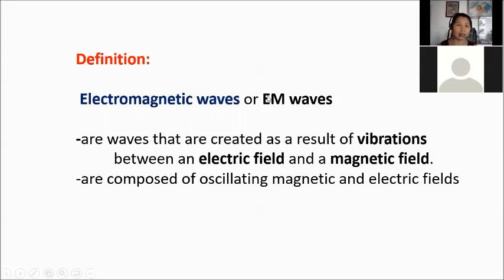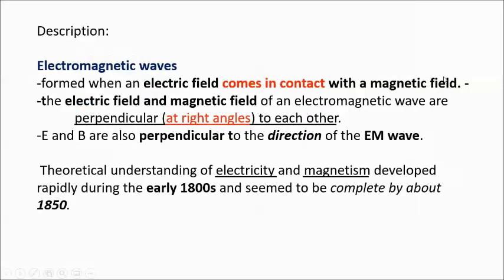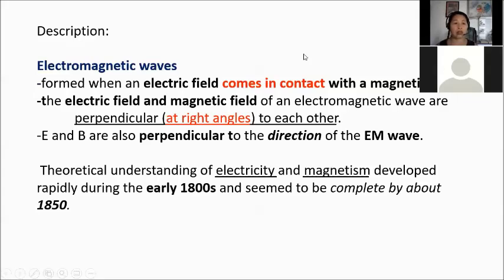Let us define what is an electromagnetic wave, or EM wave. E stands for electro and M for magnetic. These are waves that are created as a result of vibrations between electric field and magnetic field, and are composed of oscillating magnetic and electric fields. Electromagnetic waves form when an electric field comes in contact with a magnetic field. The electric field and magnetic field are perpendicular or at right angles with each other, and both E and B are also perpendicular to the direction of the electromagnetic wave.